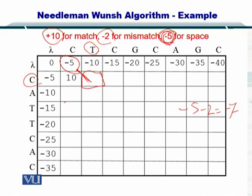In this case, the left element is 10, so the gap penalty is -5, so the answer will be 5. Here on top it is -10.